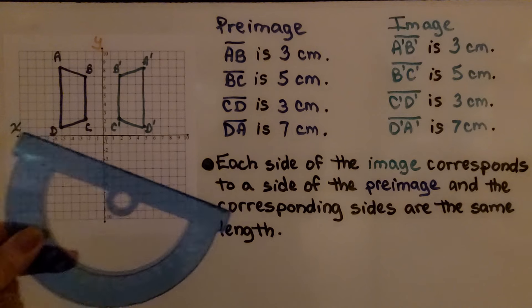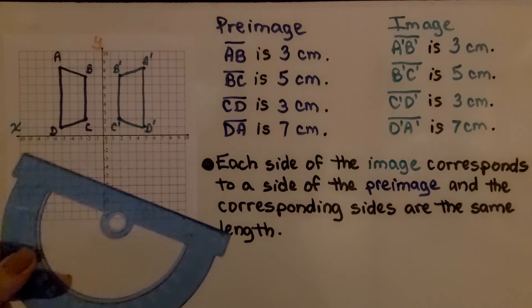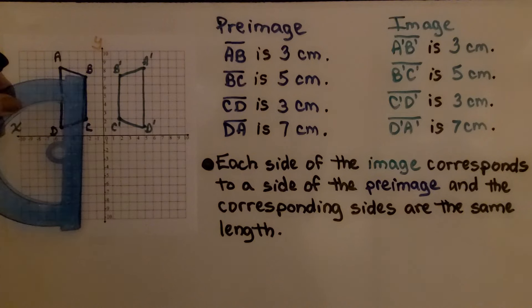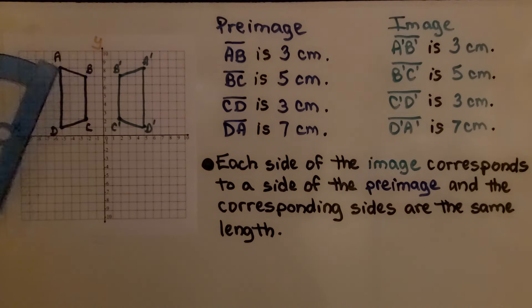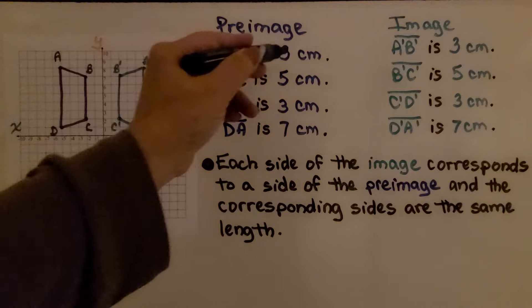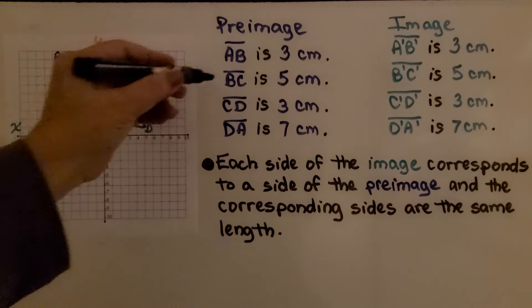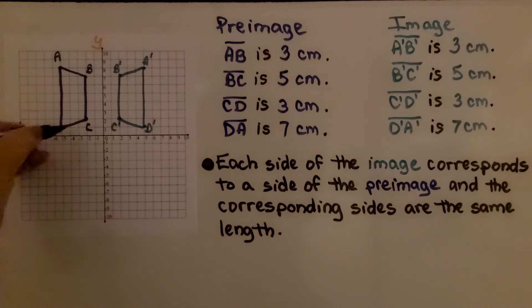We can take the straight edge side of our protractor and measure the length of the sides for our pre-image. We can measure each one in inches or centimeters. I find that line segment AB is 3 centimeters, BC is 5 centimeters, CD is 3 centimeters,